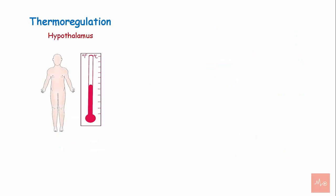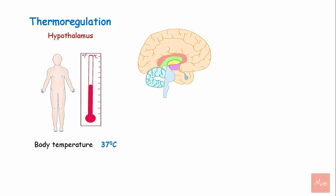Functions of the hypothalamus. Temperature regulation: the hypothalamus regulates body temperature, and under normal physiologic conditions the temperature is set at 37 degrees. This function is carried out by two centers present in the hypothalamus: the heat loss center and the heat gain center.